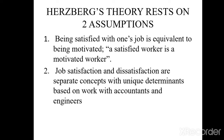The two assumptions of Herzberg's theory are: first, being satisfied with one's job is equivalent to being motivated — a satisfied worker is a motivated worker. Second, job satisfaction and dissatisfaction are separate concepts with unique determinants, based on work with accountants and engineers.